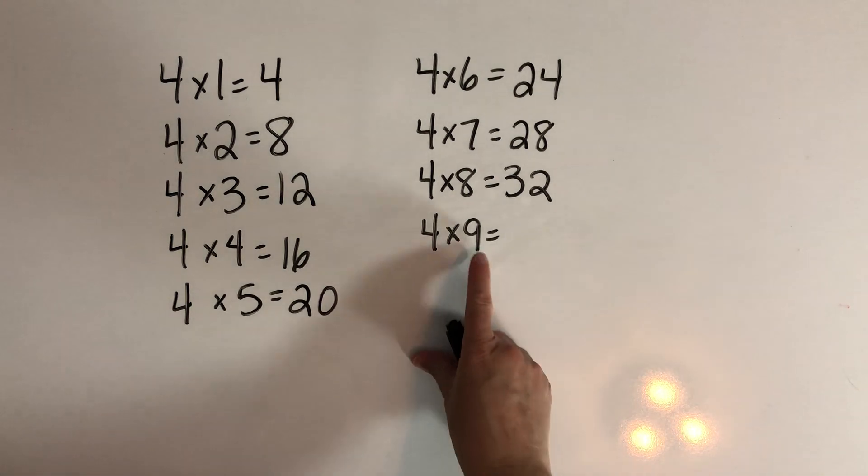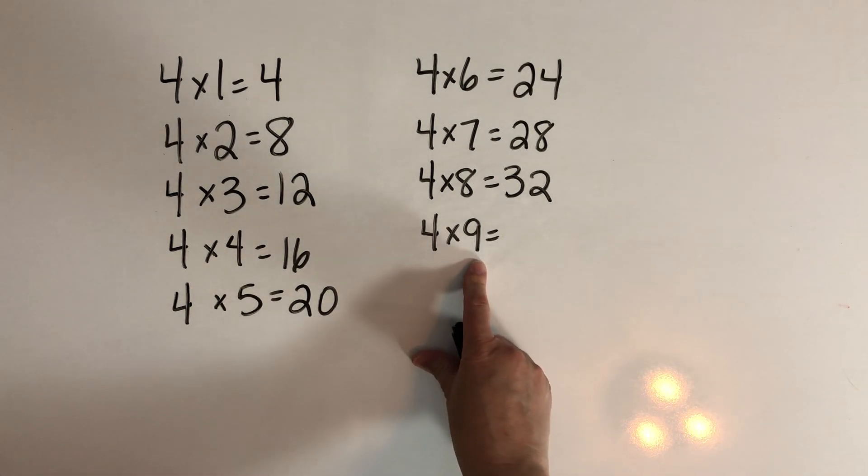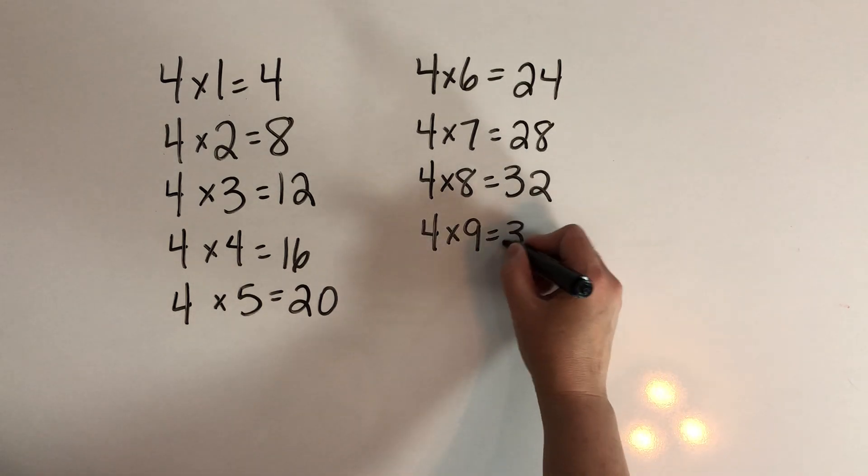Four times nine: we can think about doubling the nine to make eighteen and then doubling that eighteen to make thirty-six.